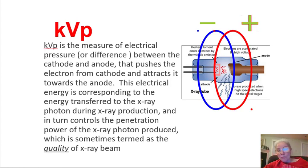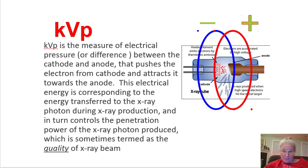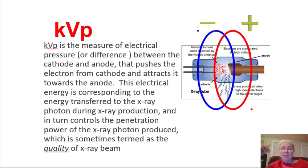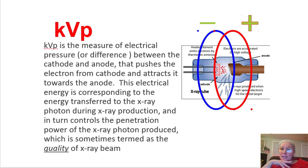kVp is the measure of the electrical pressure or difference between the cathode and the anode — one being negative, one being positive. That electrical difference creates force, or the quality of an x-ray beam. It's the electrical difference that pushes the electron from the cathode toward the anode, and this electrical energy corresponds to the energy transferred to the x-ray photon — not the number of photons, but how powerful that photon is — which controls penetration power through matter, which is you.